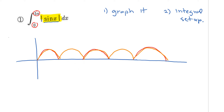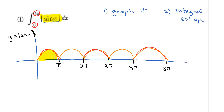This is y equals the absolute value of sine x. Over here I have π, 2π, 3π, 4π, and 5π. What I'm arguing here is that this yellow area is the same area for all these blue regions. So we don't need to set up 5 different integrals — we can just set up the integral expression for one of these regions and multiply it by 5.